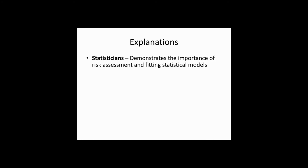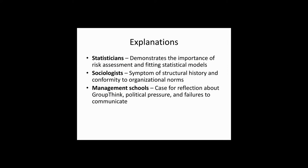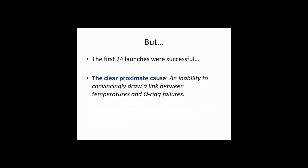So there's some explanations about this. Statisticians say it demonstrates the importance of risk assessment and fitting statistical models, although there's some problems with that argument in that they didn't have any data for this range of temperatures. Sociologists, it's a conformity to organizational norms problem. Management schools say it's a case for reflection about groupthink and failures to communicate and politics. And, of course, the engineers say it's the awful consequences when heroic engineers are ignored by villainous pointy-haired bosses. But the first 24 launches were successful. And the proximate cause seems to be that there was an inability for those engineers to convincingly draw a link between temperatures and O-ring failures.